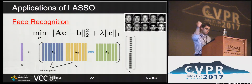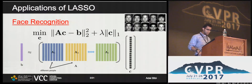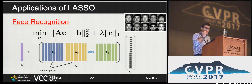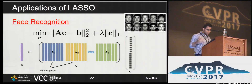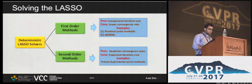We can easily see where large-scaleness comes into play. The more people we want to distinguish among, the more columns we have. And the more diversity within each block or person, the more columns we have. As for the number of rows, it consists of vectorized image patches, which is self-explanatory. So in either way, the dictionary A is large in at least one of the two dimensions, if not both. The applications also extend to tracking, subspace clustering, image inpainting, and many more.